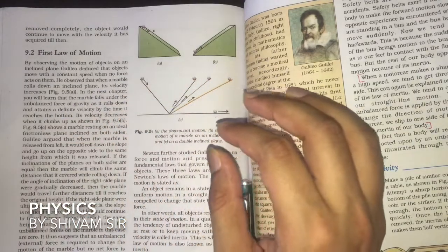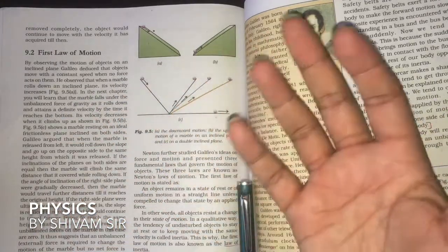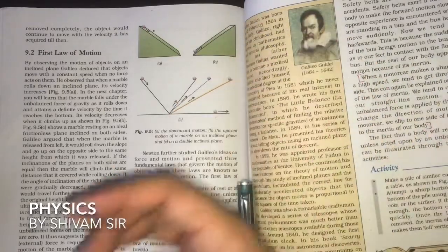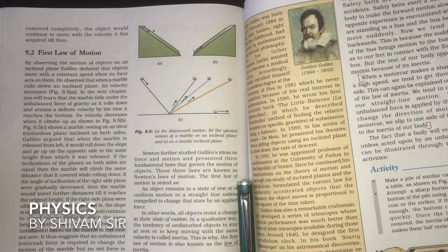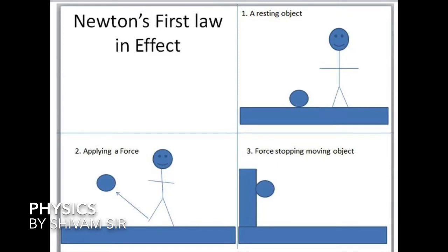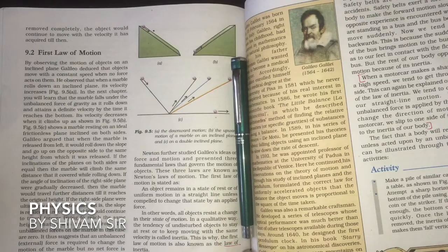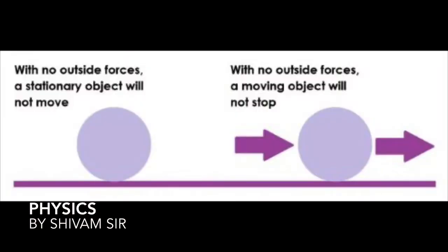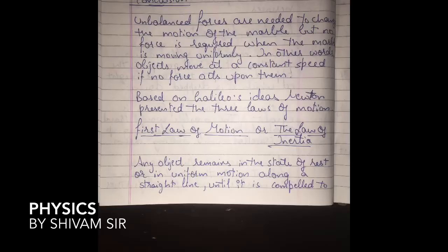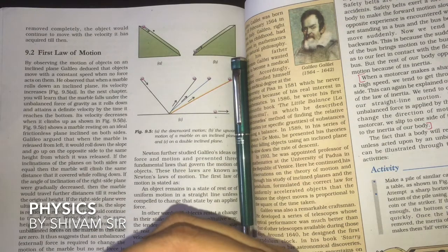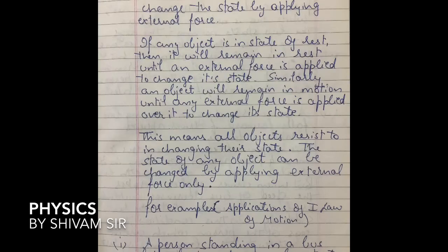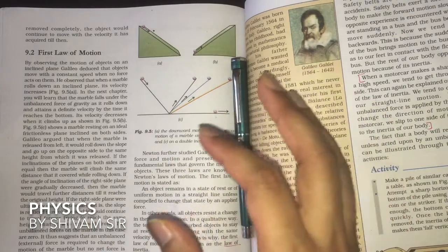Based on Galileo's ideas, Newton presented the three laws of motion. The First Law of Motion is also called the Law of Inertia. Newton's First Law states: any object remains in the state of rest or in uniform motion along a straight line until it is compelled to change that state by an applied external force. If any object is at rest it will remain at rest, and if in motion it will remain in motion, until an external force acts on it.